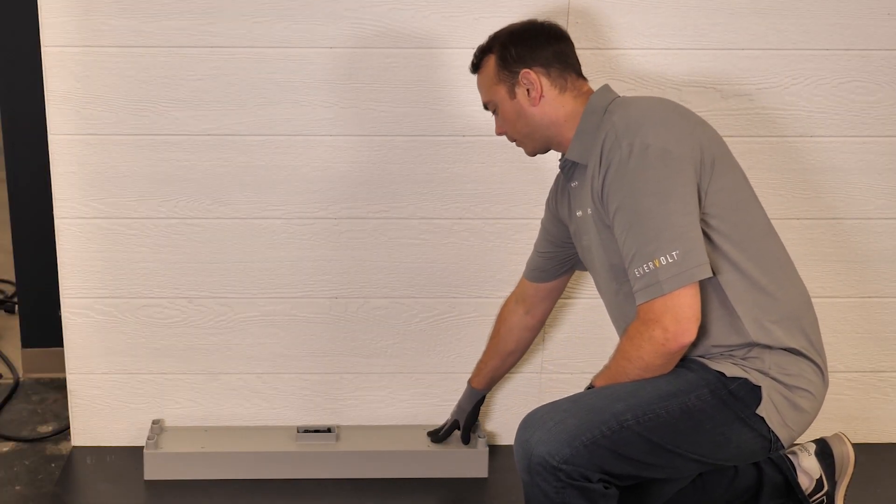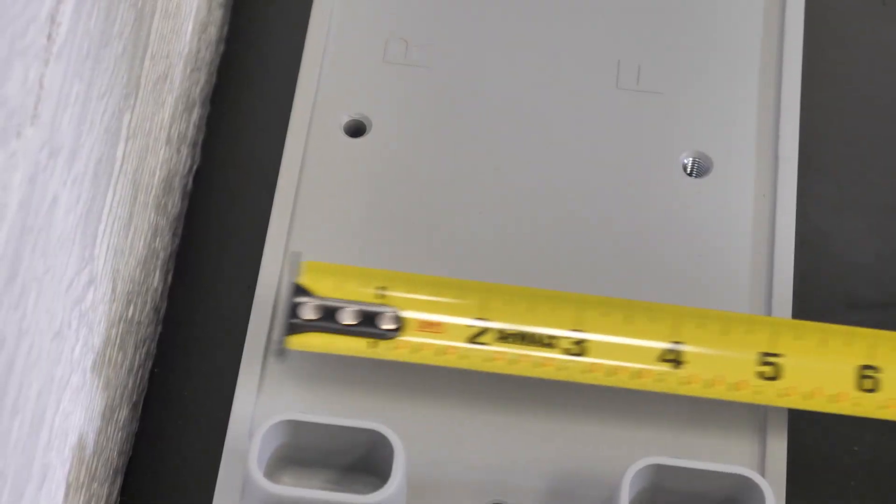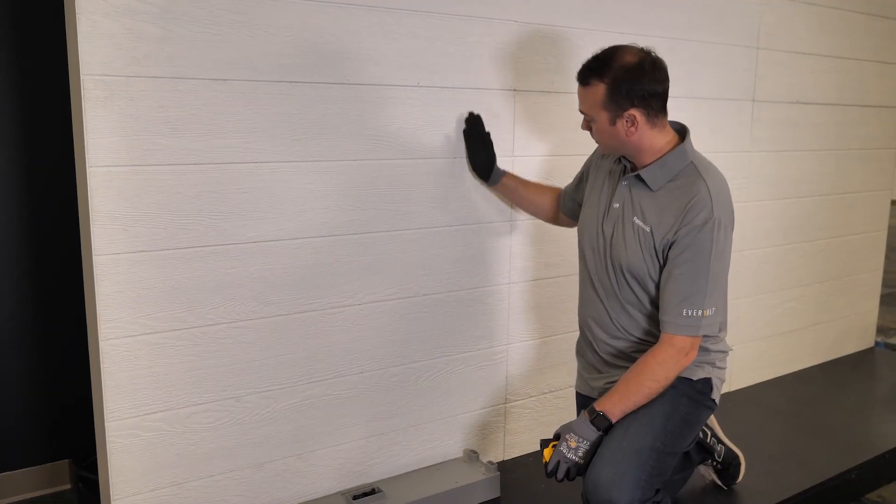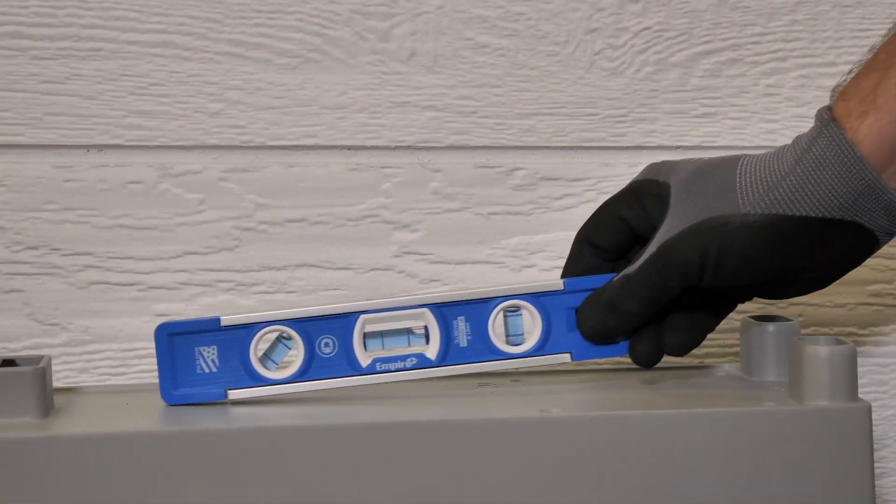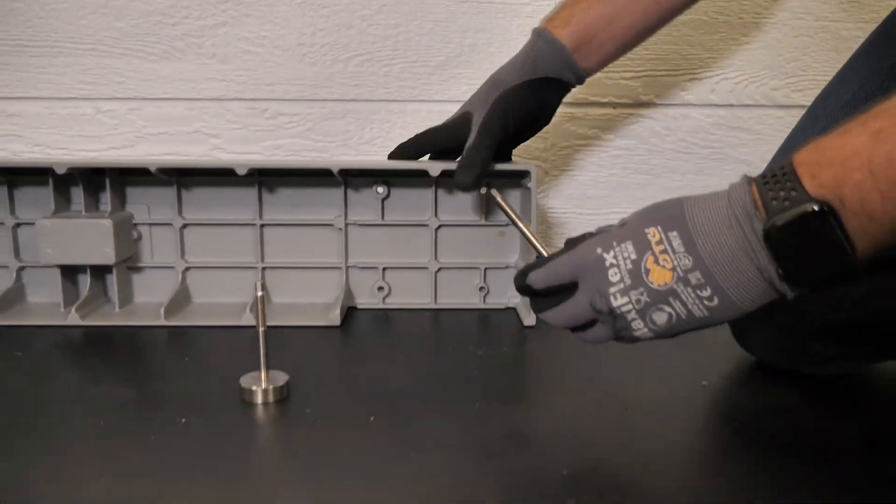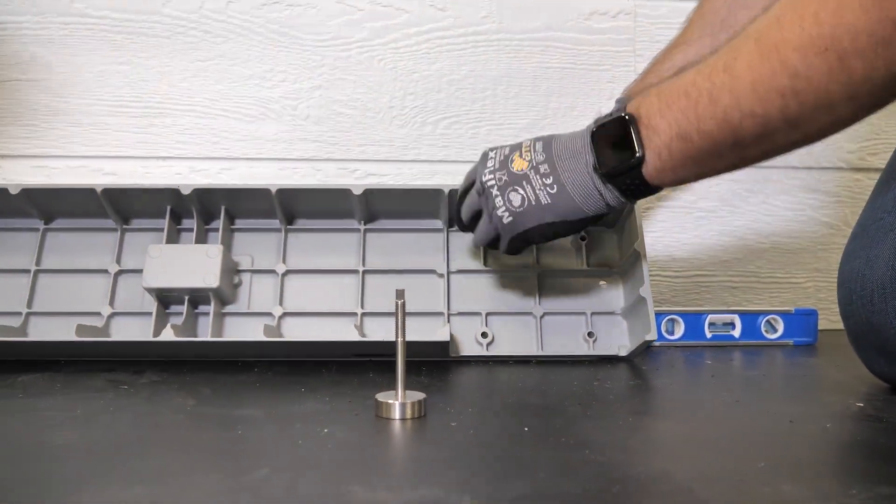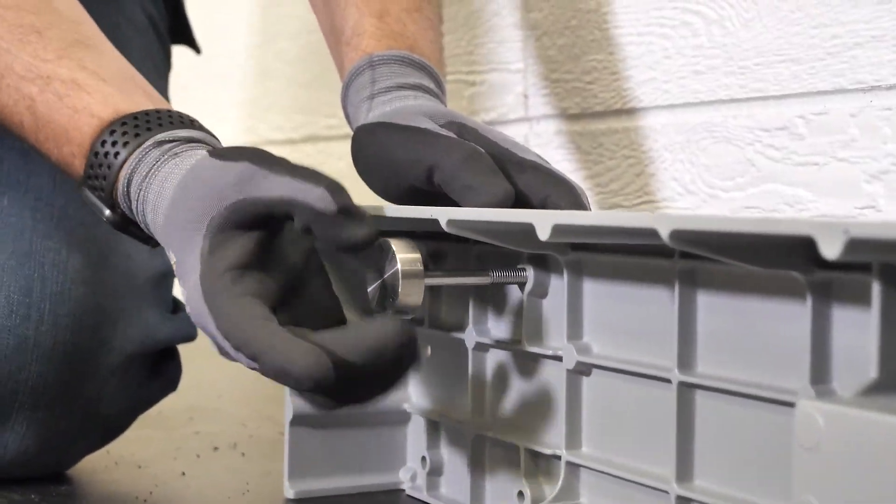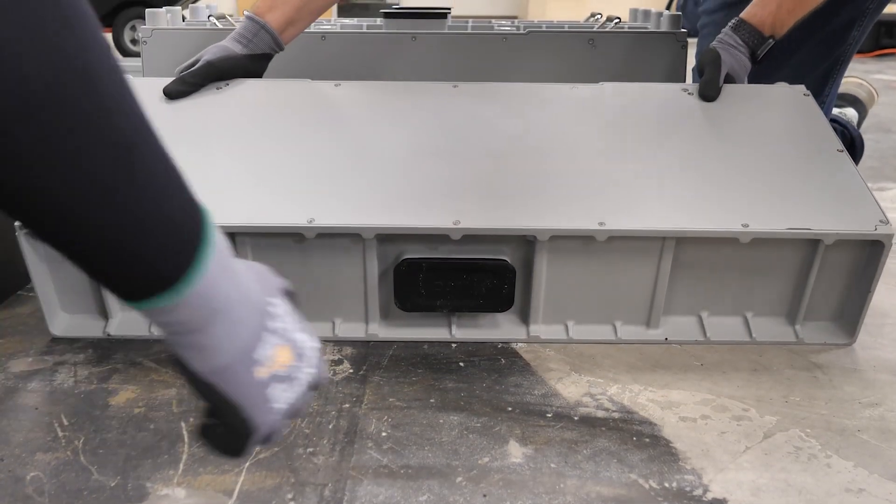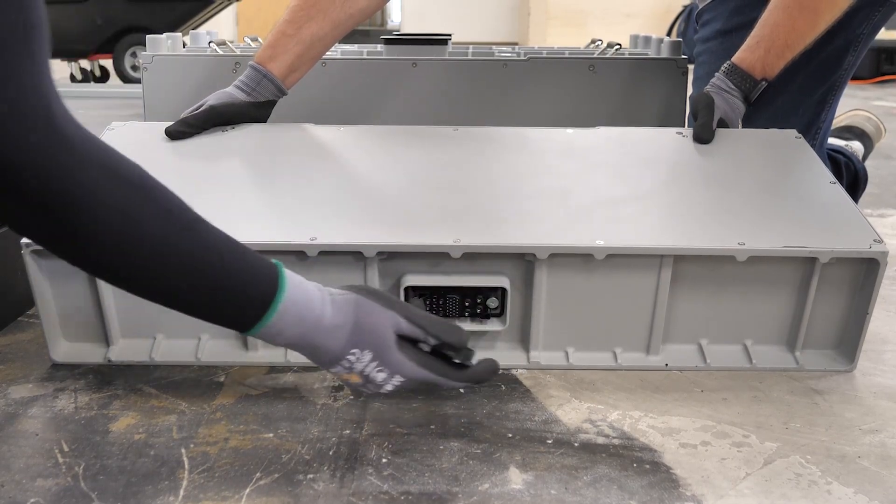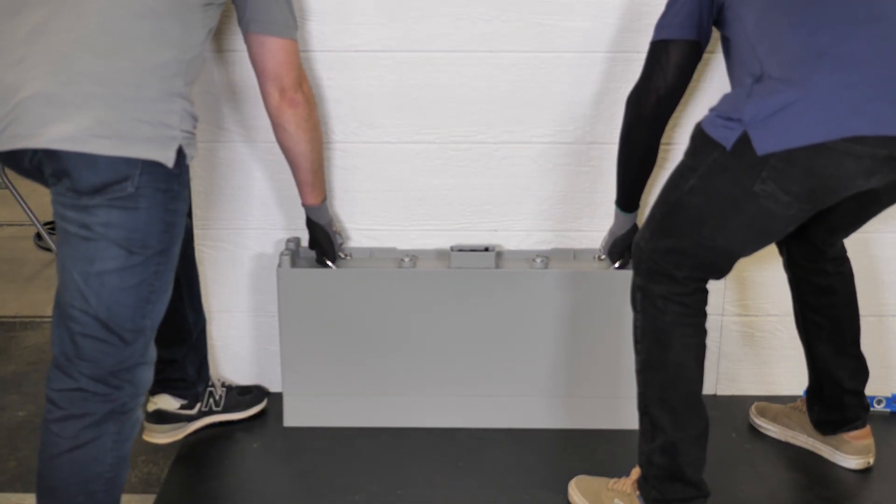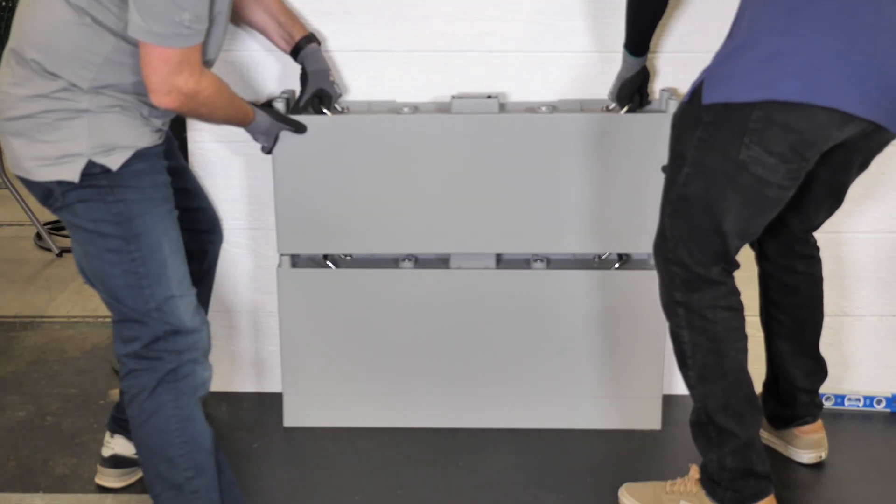You'll place the battery floor mount bracket on the floor approximately an inch and a half away from the wall and between your studs. Make sure it's level, add the first battery, add the second battery.